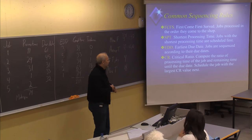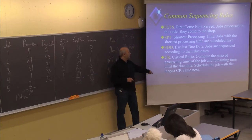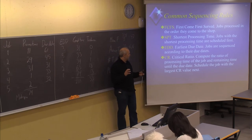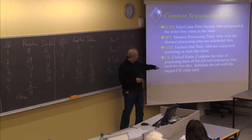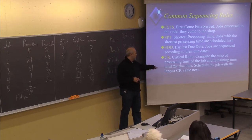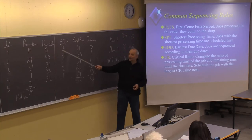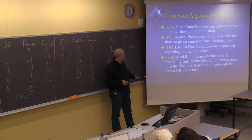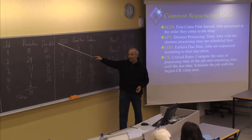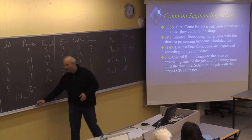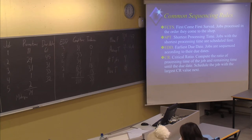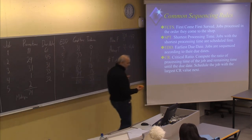Let's now look at the fourth strategy: the critical ratio, where we compute the ratio of the processing time of the job to the remaining time until the due date, and schedule the job with the largest CR value next. This is actually opposite to the example in the textbook. It depends on whether you are dividing the processing time by the due date or the opposite — either you schedule the job with the largest CR or the smallest CR, depending on what you are dividing by what. But the principle is still the same.